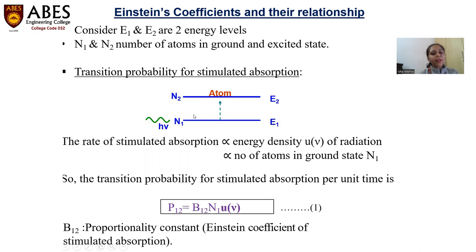What will be the rate of stimulated absorption? When the atom is getting absorbed, we apply an incident photon h-nu such that its energy equals E2 minus E1. The rate of stimulated absorption is proportional to two factors: one is the energy density of the incident photon — which we call U-nu — and the other factor depends upon the number of atoms in the ground state, N1.